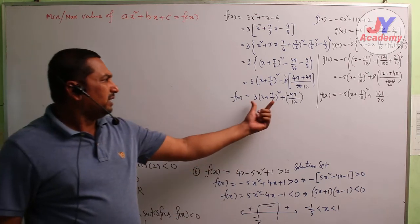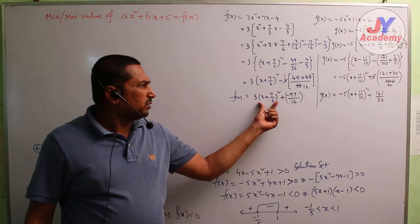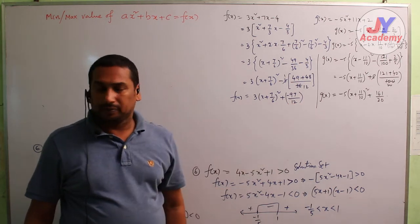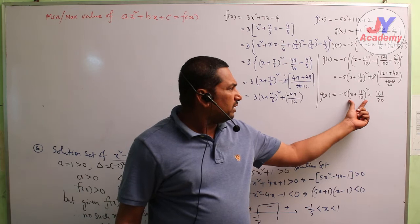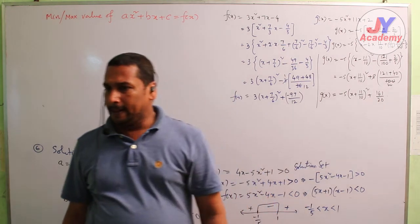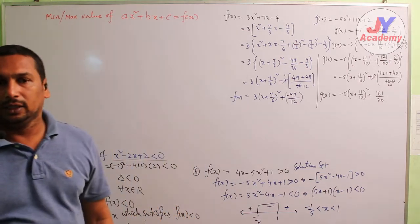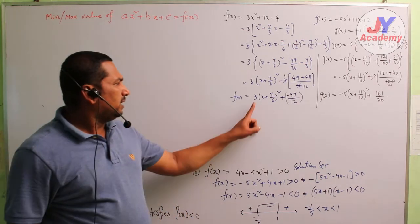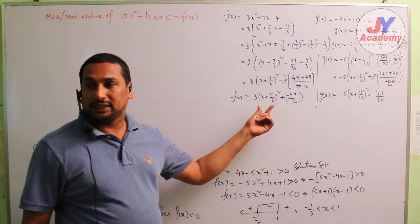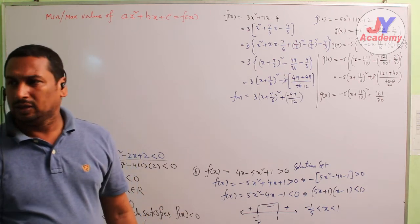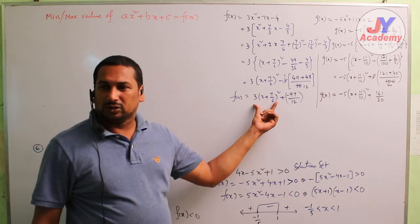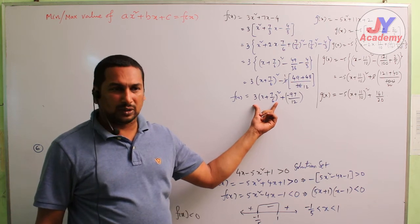So f(x) equals 3·[x + 7/6]² + (minus 97/12), and here minus 5·[x + 11/10]² + 161/20. If you observe: even though x + 7/6 is negative, its square becomes positive — positive times positive, so their product is also positive.